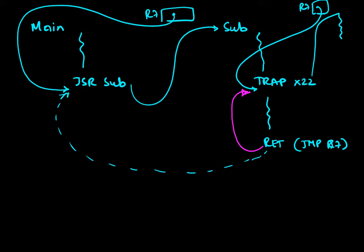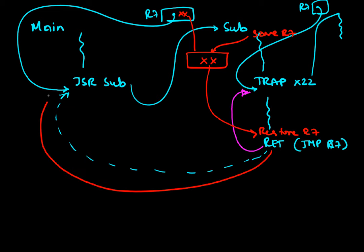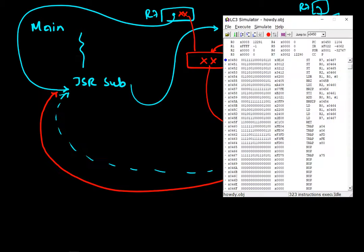So if you are going to use the old simulator, what you ought to do is make sure you save R7 before the trap and then restore R7 after it. If you save the current value of R7 — let's call it x — to some memory location x before the trap call, then read it back afterward, that will force you to return to the original correct position.